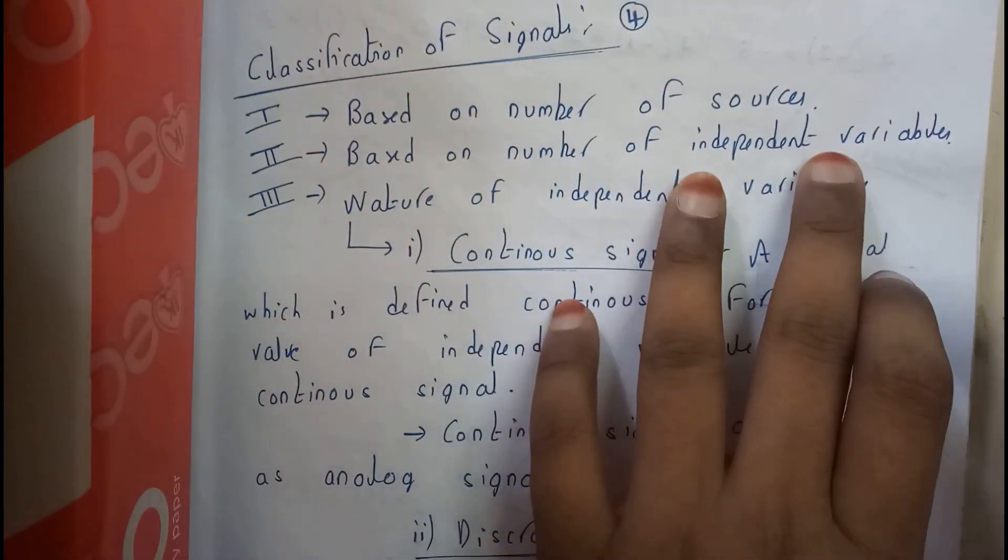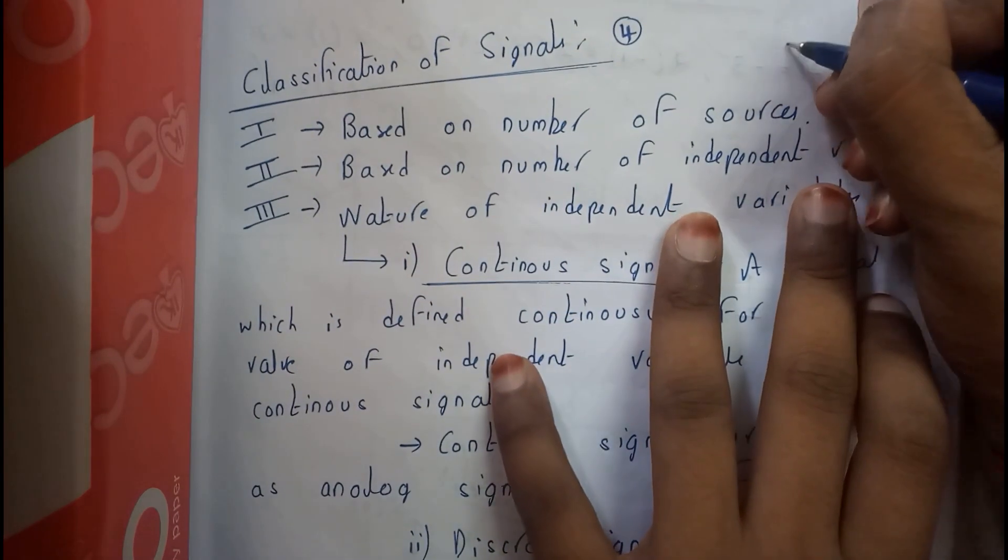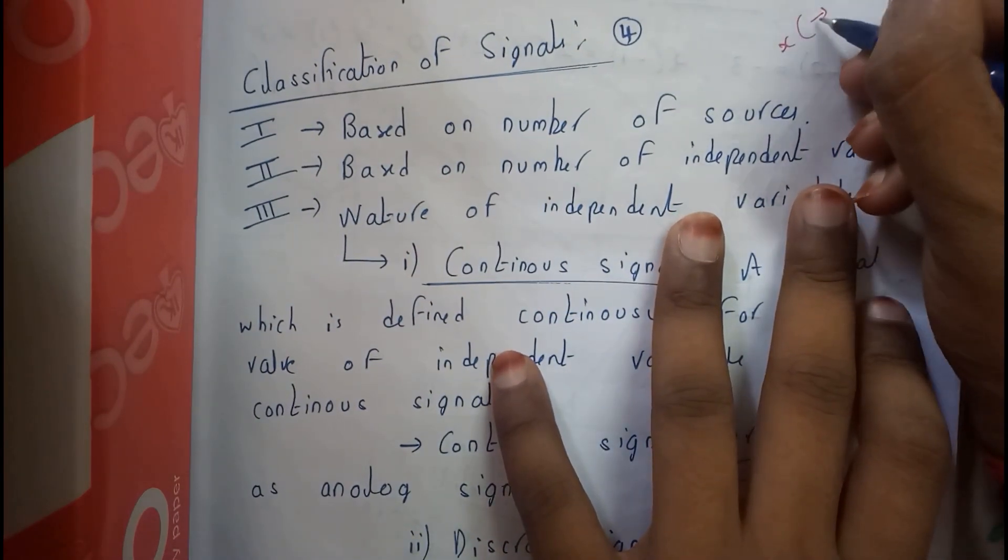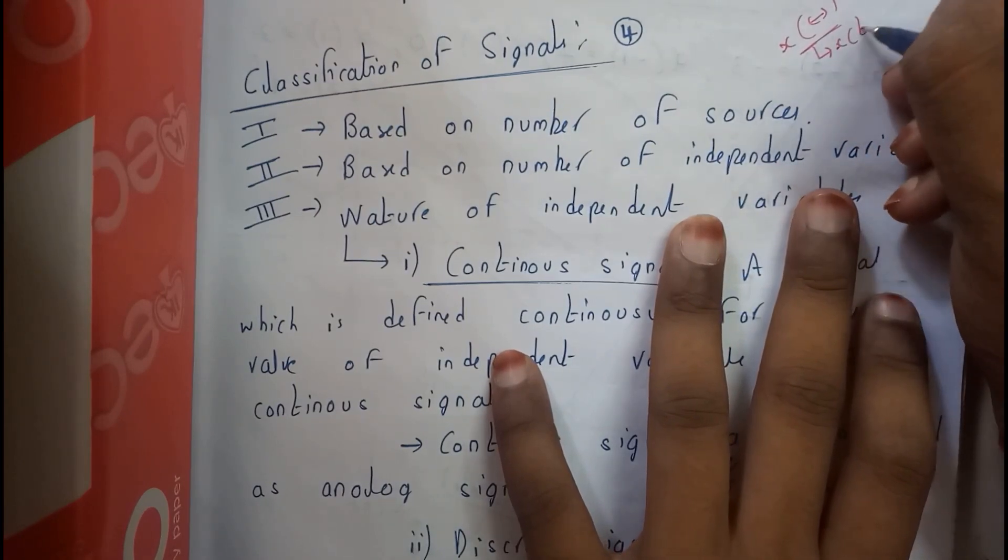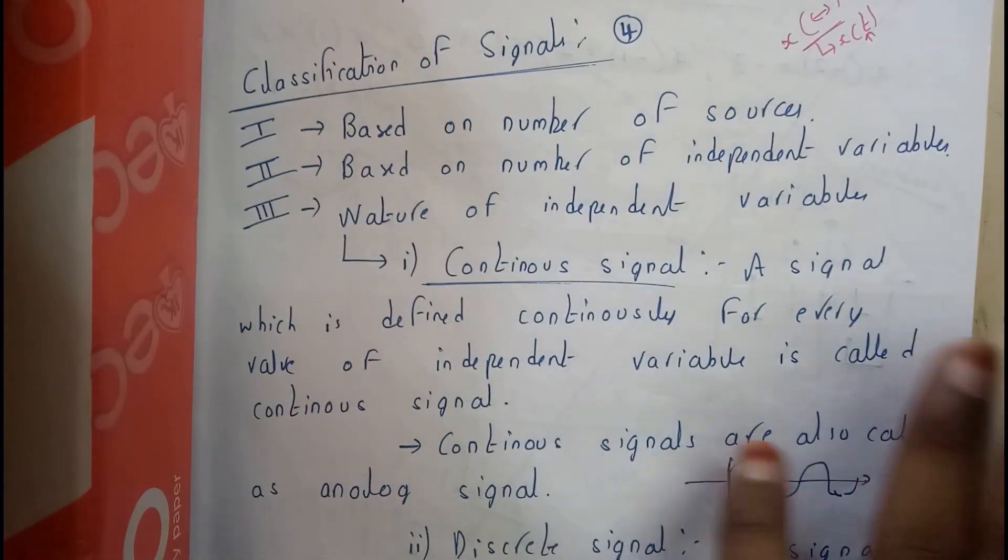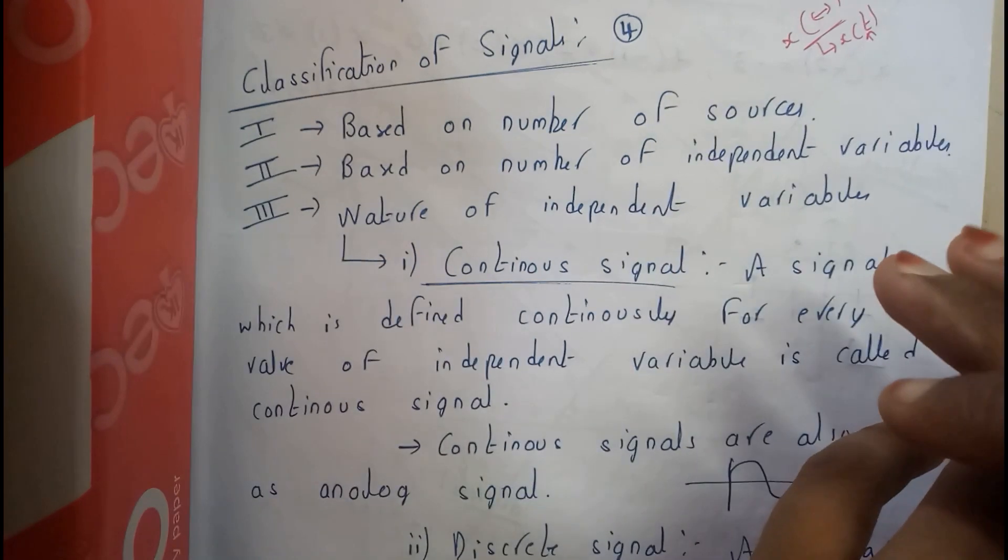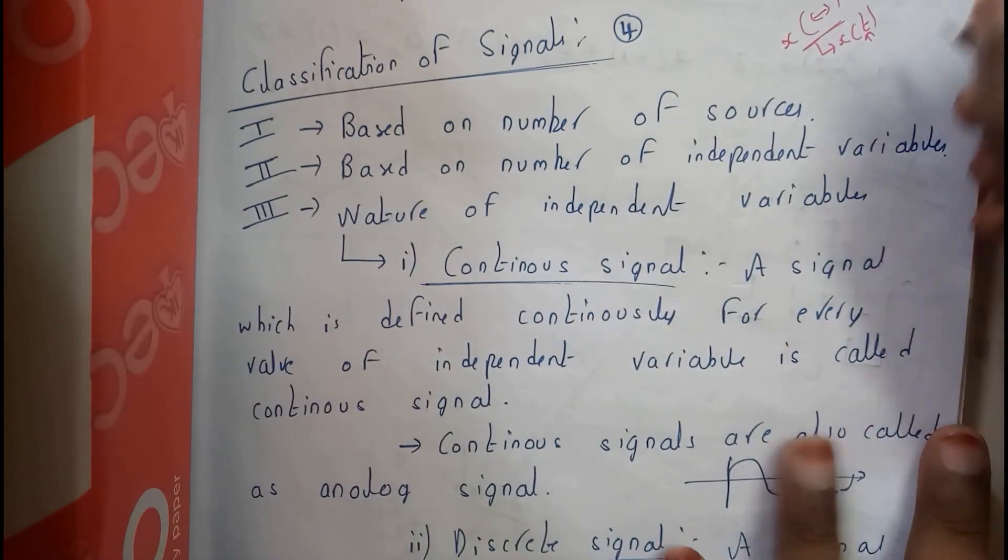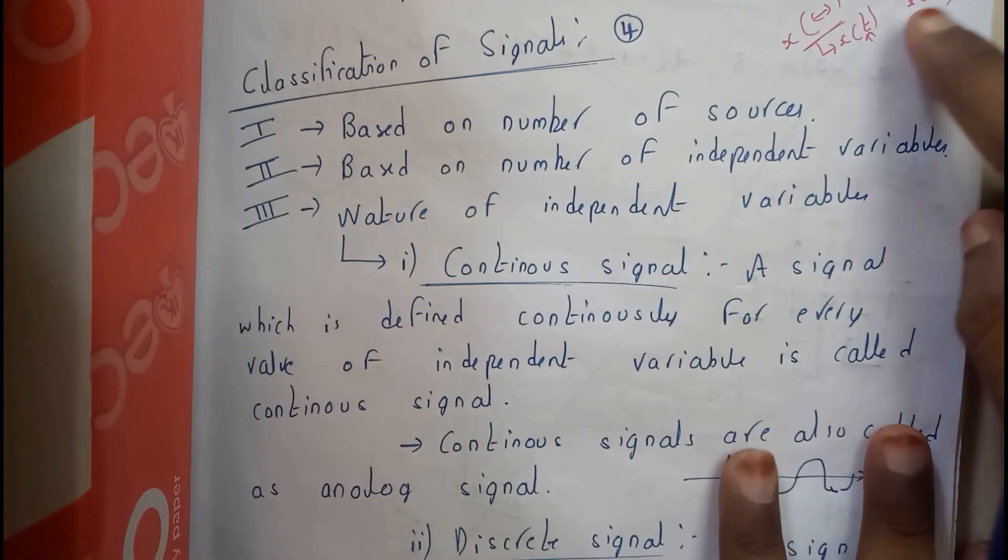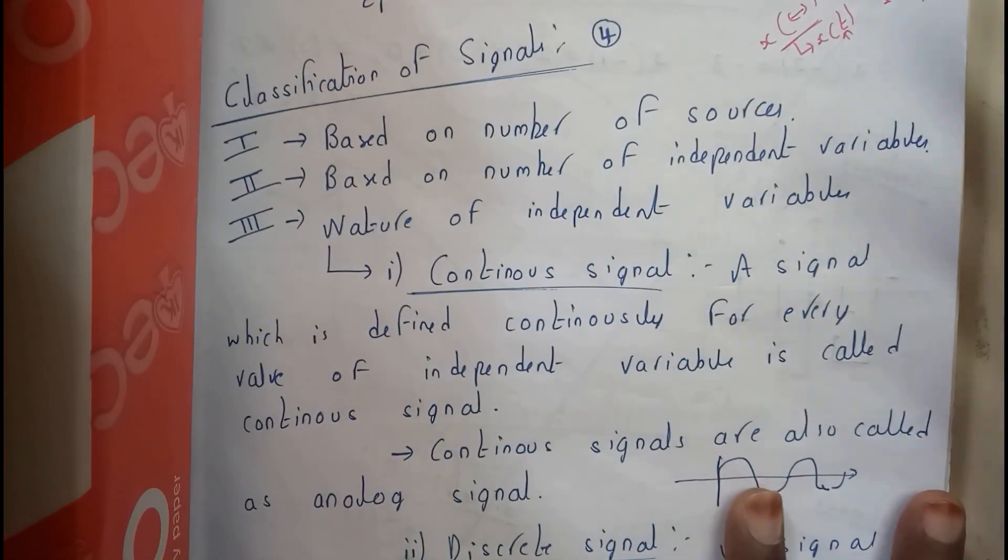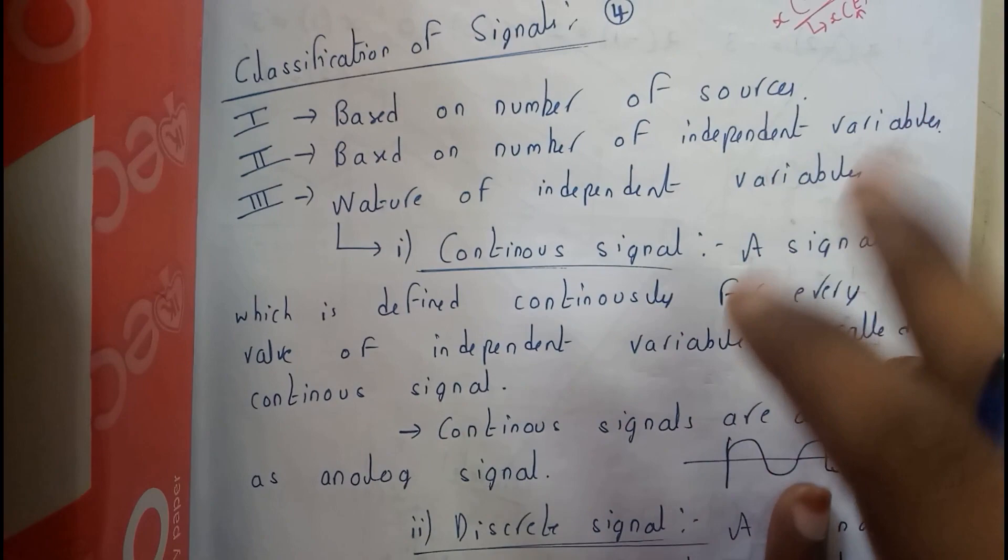Based on the number of independent variables. Independent variables are nothing but the variables inside the parameters. Basically, in our syllabus, we are going to have only x of t with respect to time. There may be x of t comma n, there may be anything with respect to time and frequency or anything like that.